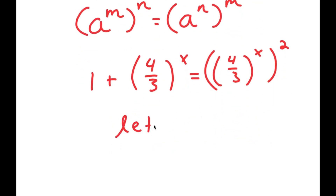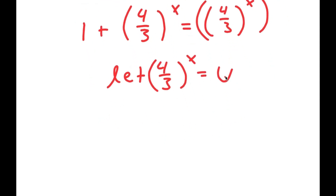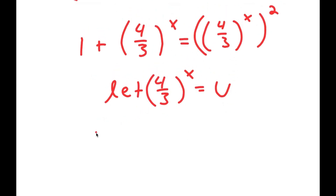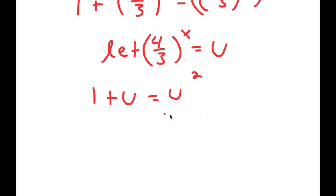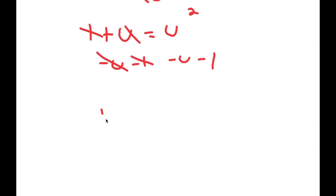And now I'm going to let 4 over 3 to the power of x equal u. So if I substitute in u for 4 over 3 to the power of x, I get 1 plus u is equal to u squared. And now if I subtract u and 1 from both sides, I get u squared minus u minus 1 is equal to 0.